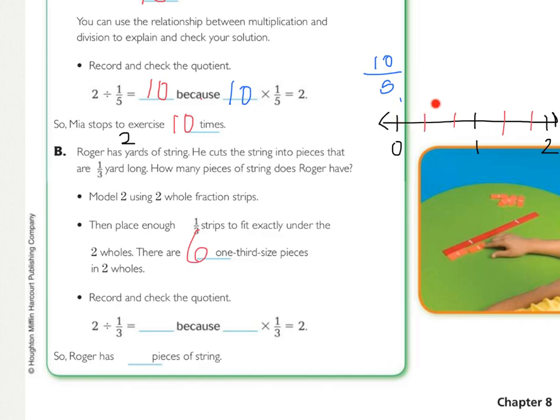So that means that there are six one third pieces. And then if you skip count again, there's one third, two third, three third, four third, five third, six third.